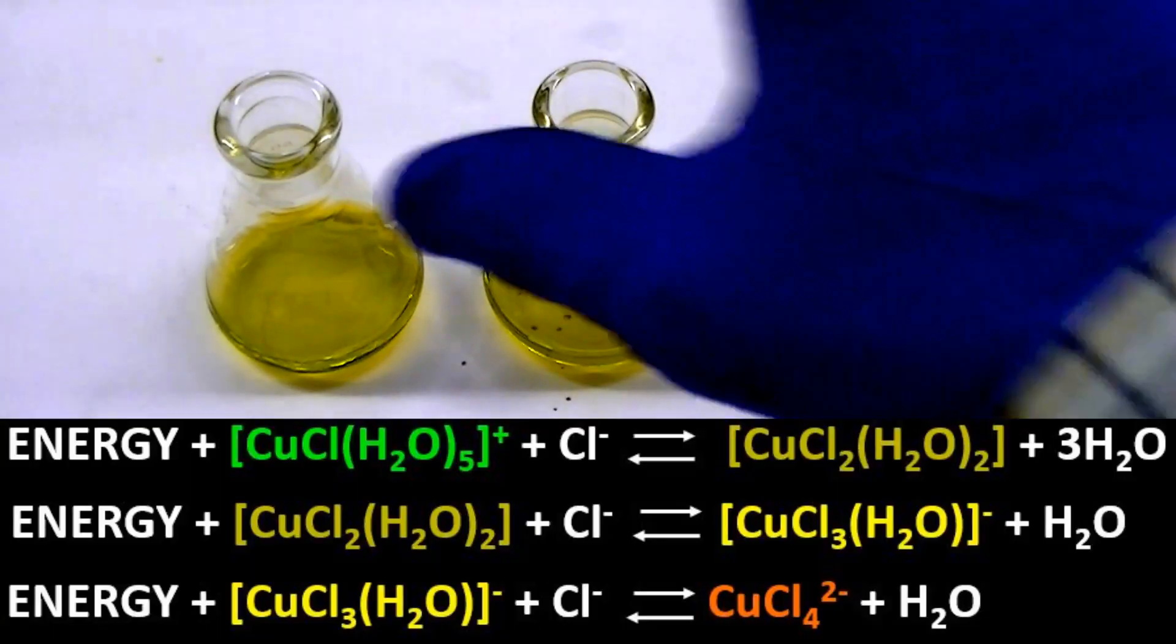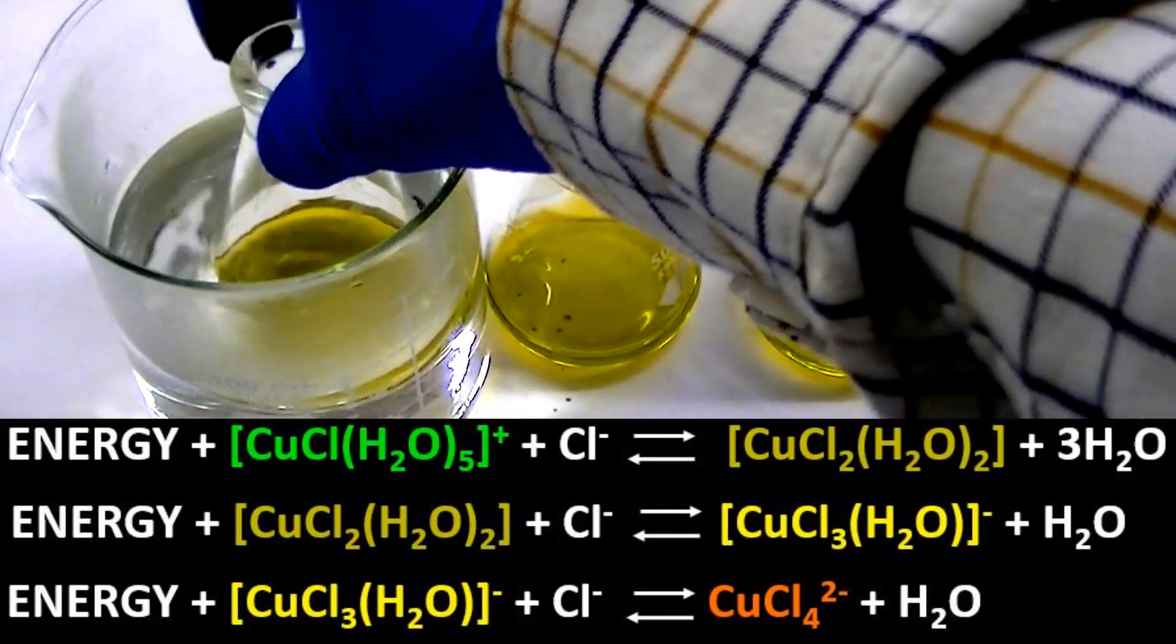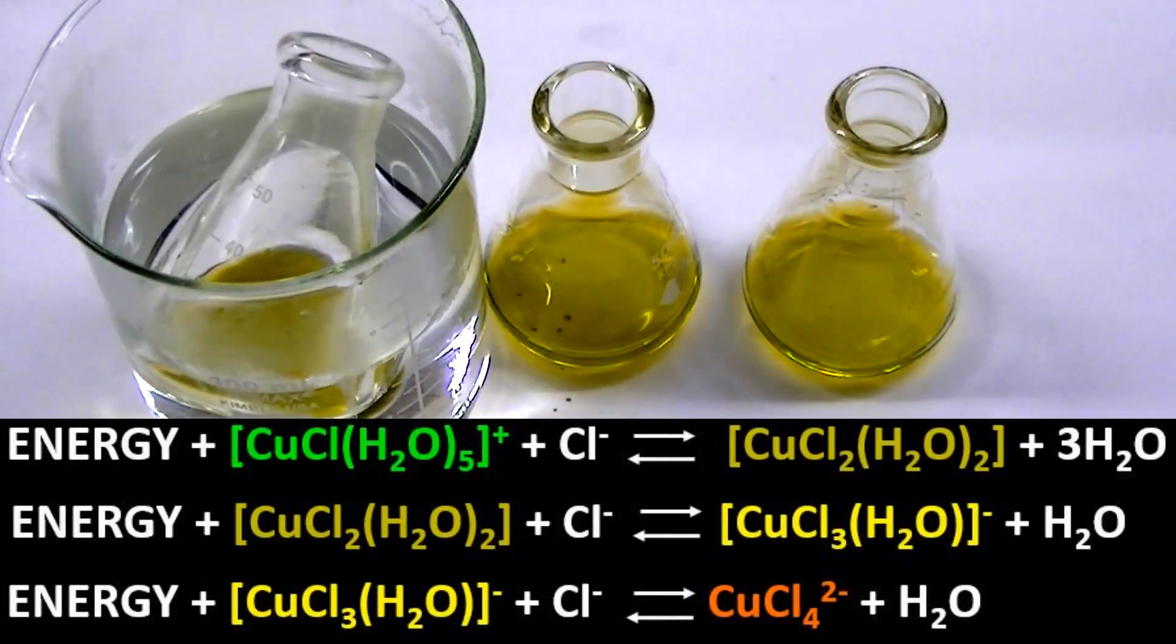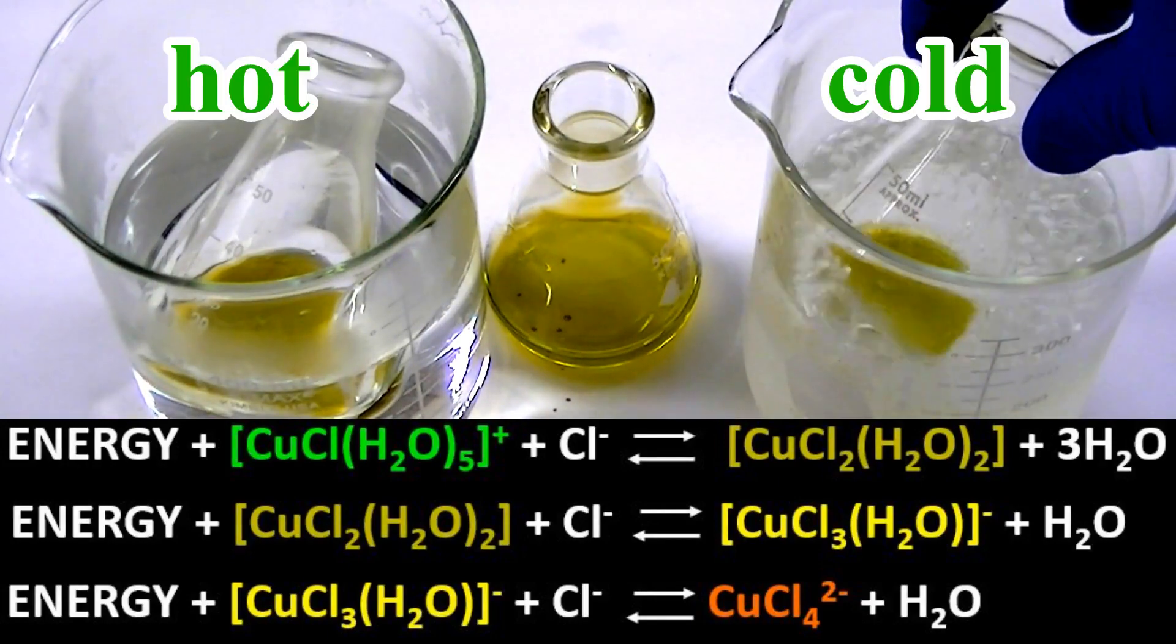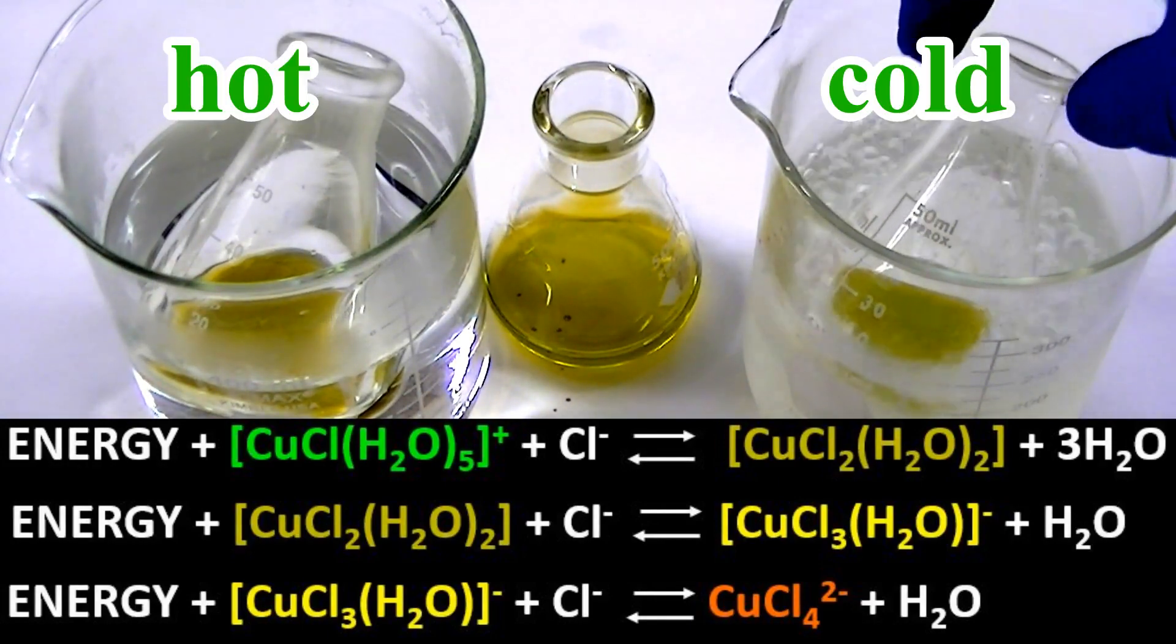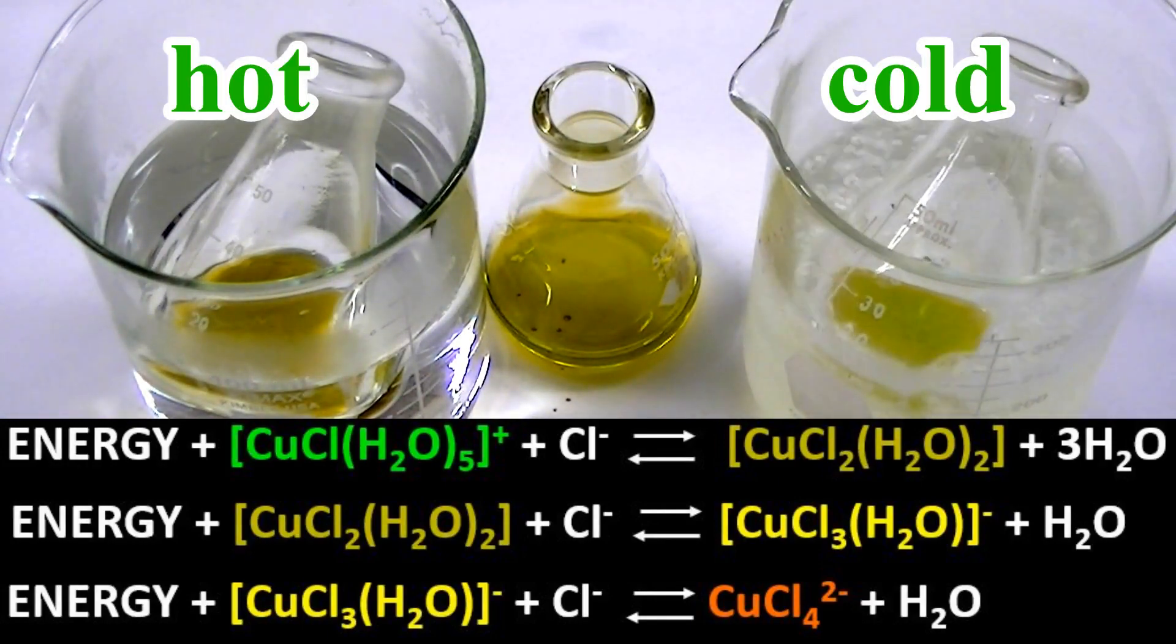I'll place portions of this solution in some hot water on the left, and some acetone that's been chilled with dry ice on the right. The yellow-green dichloro-copper complex participates in several reactions with water and chloride ion. Some of these reactions are illustrated below.